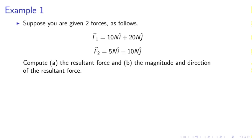Example 1. Suppose you are given two forces as follows: F1 equals 10 Newton i hat plus 20 Newton j hat, F2 equals 5 Newton i hat minus 10 Newton j hat. Compute the resultant force and the magnitude and direction of the resultant force.